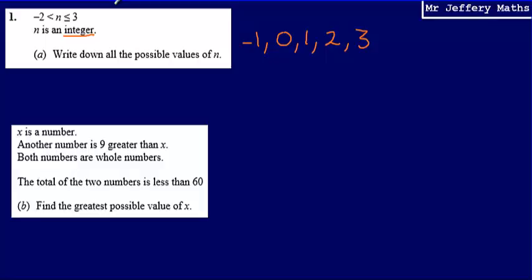So the first thing we're going to do here is form an inequality with the information that we're given. We're told that x is a number and that another number is 9 greater than x, and the total of the two numbers is less than 60.